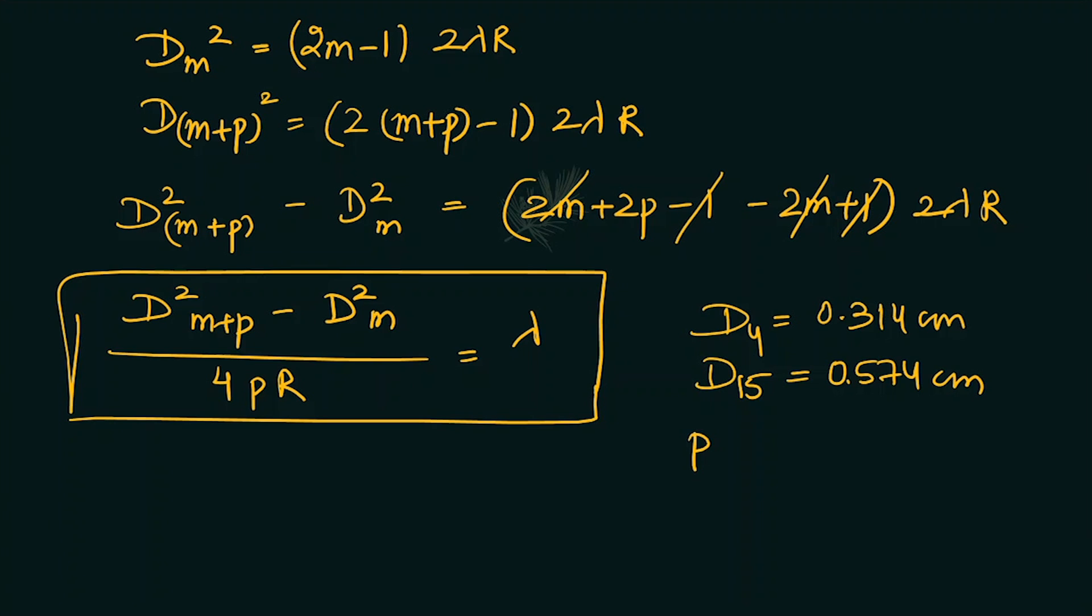So here our p value is the difference of the ring numbers: 15 - 4 = 11. Let's put the values here, R is 100 centimeter, so our lambda will become...